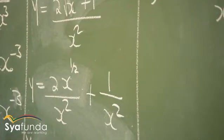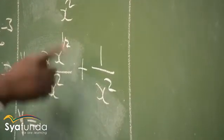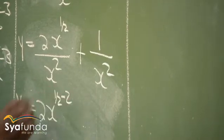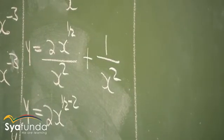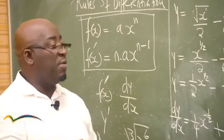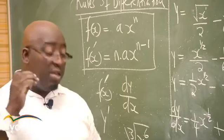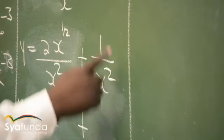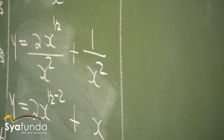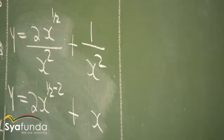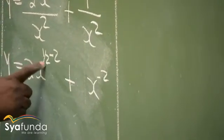Cleaning the expression first: y = 2x^(1/2)/x² + 1/x². Bringing x² to the numerator changes the sign of its exponent. For the first term: x^(1/2 − 2) = x^(−3/2). For the second term: 1·x^(−2). So y = 2x^(−3/2) + x^(−2). Now we can clearly see a, x, and n for each term.